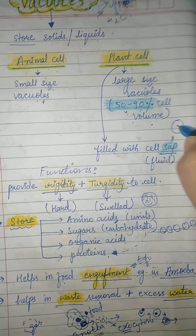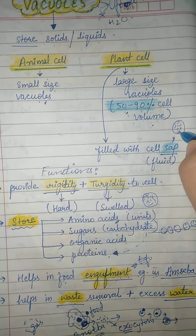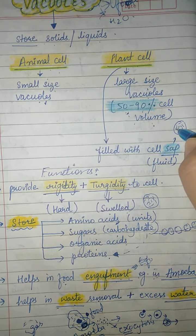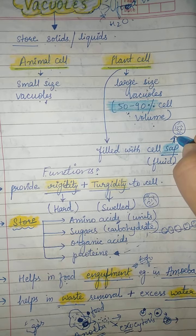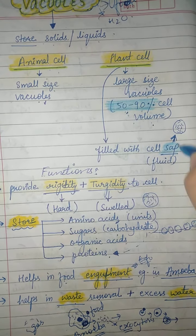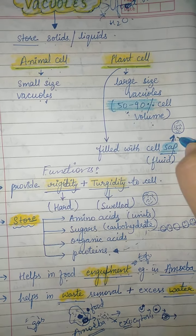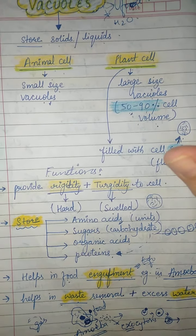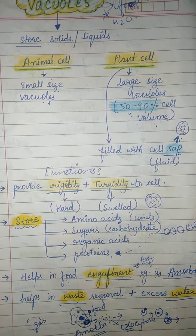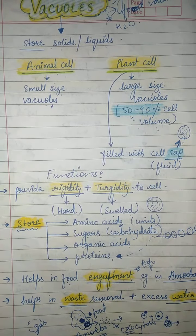The fluid found inside the large plant cell vacuole is called sap.